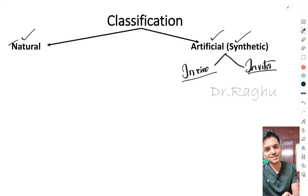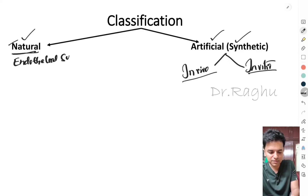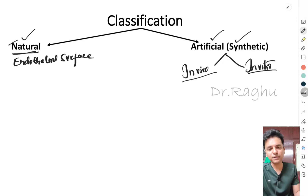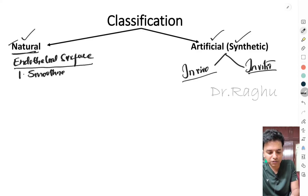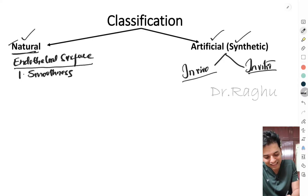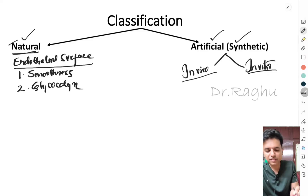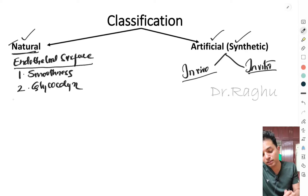The most important naturally occurring anticoagulant is the endothelial surface. Because of the endothelial surface, blood does not clot inside the body and is kept in liquid form. The first reason is the smoothness of the endothelial surface, which prevents clotting. Second, the endothelial surface is lined by glycocalyx, which also helps prevent clot formation as blood flows through the vessel.